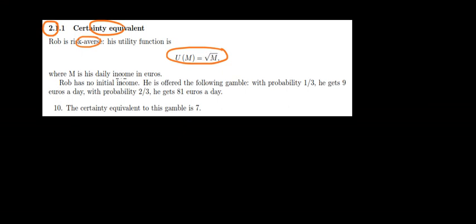Square root of our money. Now, we have no initial income, we have the following gamble. With probability 1 over 3, we could get 9. With probability 2 over 3, we could get 81. Is it true or false? The certainty equivalent is 7.